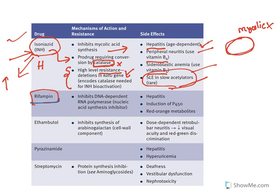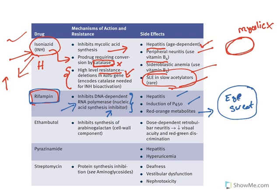The next drug is rifampin, also known as rifampicin. It inhibits DNA-dependent RNA polymerase of the tuberculosis organism without affecting the human enzyme. Side effects include hepatitis and induction of cytochrome P450 enzymes. It produces red-to-orange metabolites, so all secretions — including urine, sweat, and eye discharge — may appear orange. Patients need to be informed of this to avoid alarm.